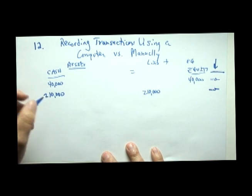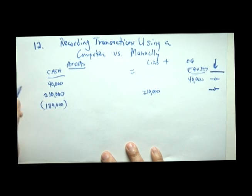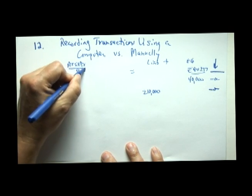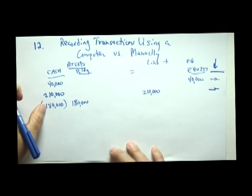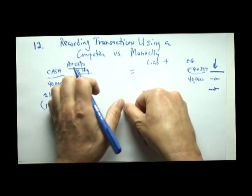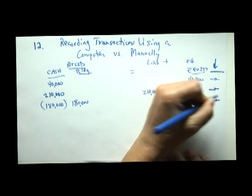The third entry, we bought a building, recall, for $180,000, where cash went down and building went up. Here, all changes in assets were zero. All changes in liabilities and equity were zero. And we would come out with zero there.